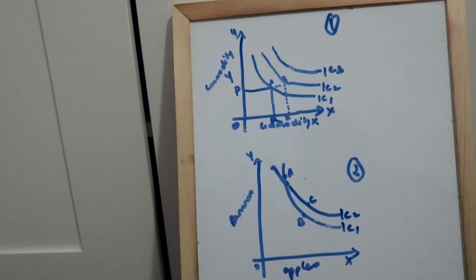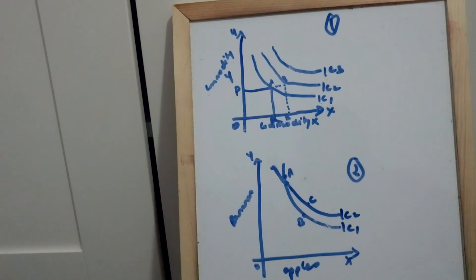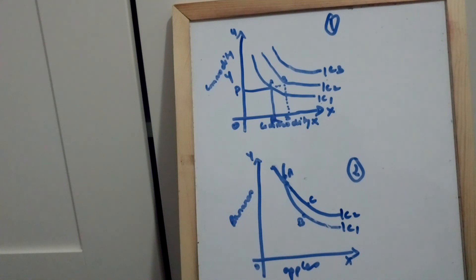The indifference curve analysis assumes consumption of two goods — that is, two goods are always consumed. If the indifference curve touches the y-axis, it would mean that consumption of the commodity on the x-axis is zero. Similarly, if the indifference curve touches the x-axis, it would mean that consumption of the commodity on the y-axis is zero. So an indifference curve can never touch either axis.